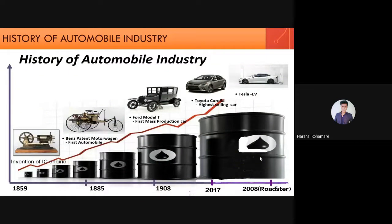We will start with the brief history of the automobile industry. The transformation came back in 1859 with the first invention of the IC engine. In 1885, the first vehicle was invented by Carl Benz, the founder of Mercedes-Benz, who took out the patent. In those days vehicles were handmade and limited. Then in 1908, for the first time, mass production of cars started by Ford — Henry Ford started the first production line of vehicles.